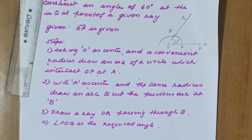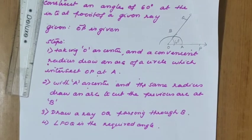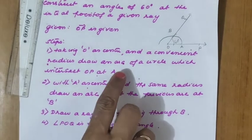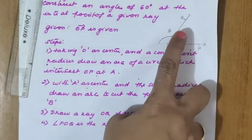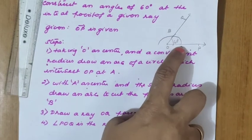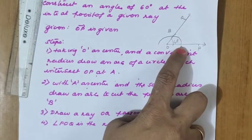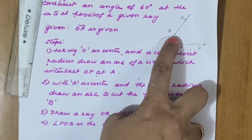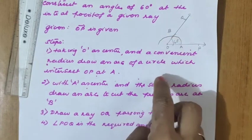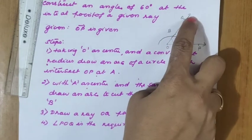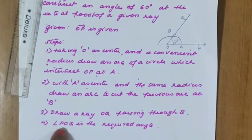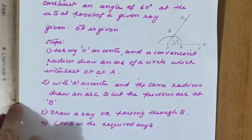Angle POQ equals 60 degrees — this is the required step. We also need to prove the justification. Once again: with O as center and a convenient radius, draw an arc cutting OP at A. With A as center, draw another arc at B. Through B draw ray OQ. Angle POQ is the required angle of 60 degrees.